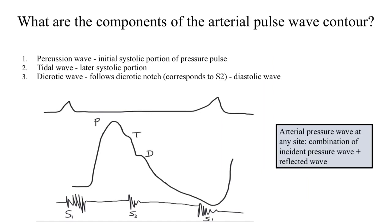What are the components of the arterial pulse wave contour? There are three possible waves which can be seen in an arterial line tracing. First is the percussion wave, second is the tidal wave, and third is the dicrotic wave. The percussion wave is the initial systolic portion of the pressure pulse and is always seen in every arterial tracing. The tidal wave is seen in the later part of the systolic portion — it is not always present, but in some circumstances it is very prominent. The dicrotic wave, on the other hand, is a diastolic wave which follows the dicrotic notch, and this dicrotic notch corresponds to the closure of the semilunar valves — that is, it corresponds to the second heart sound.